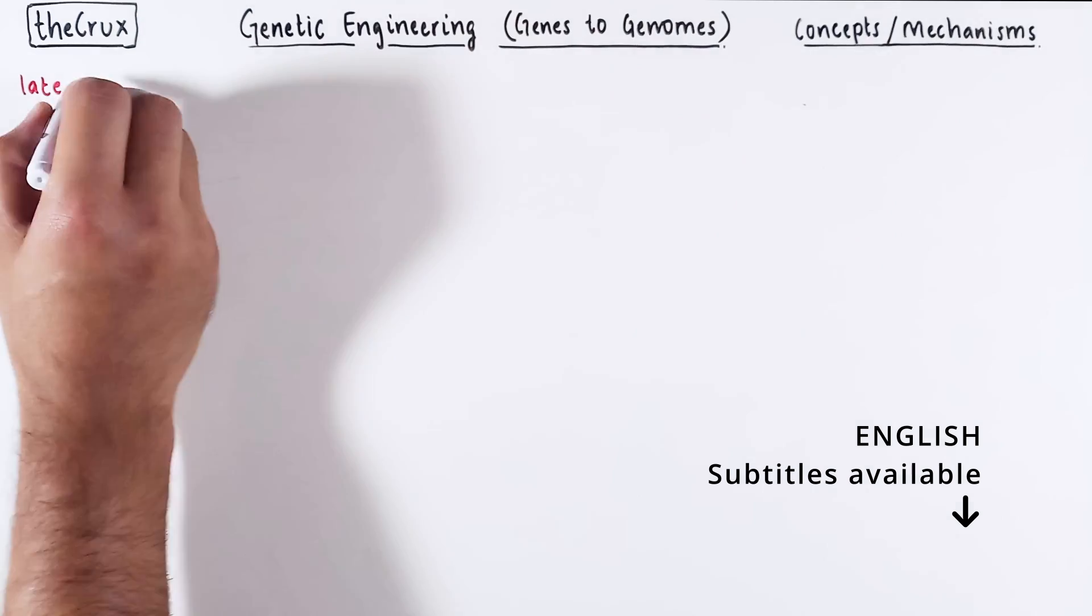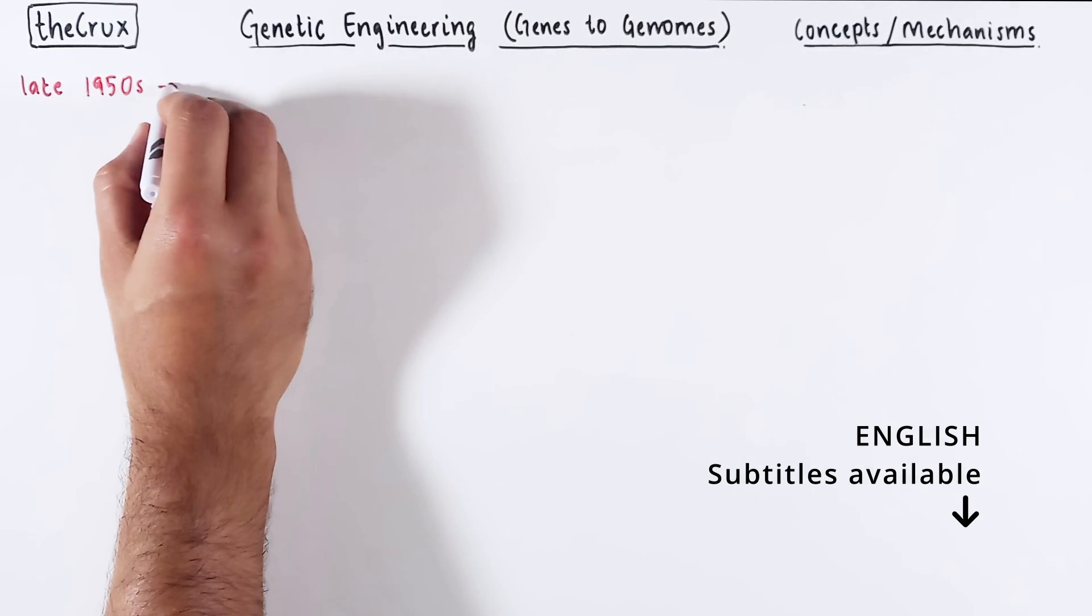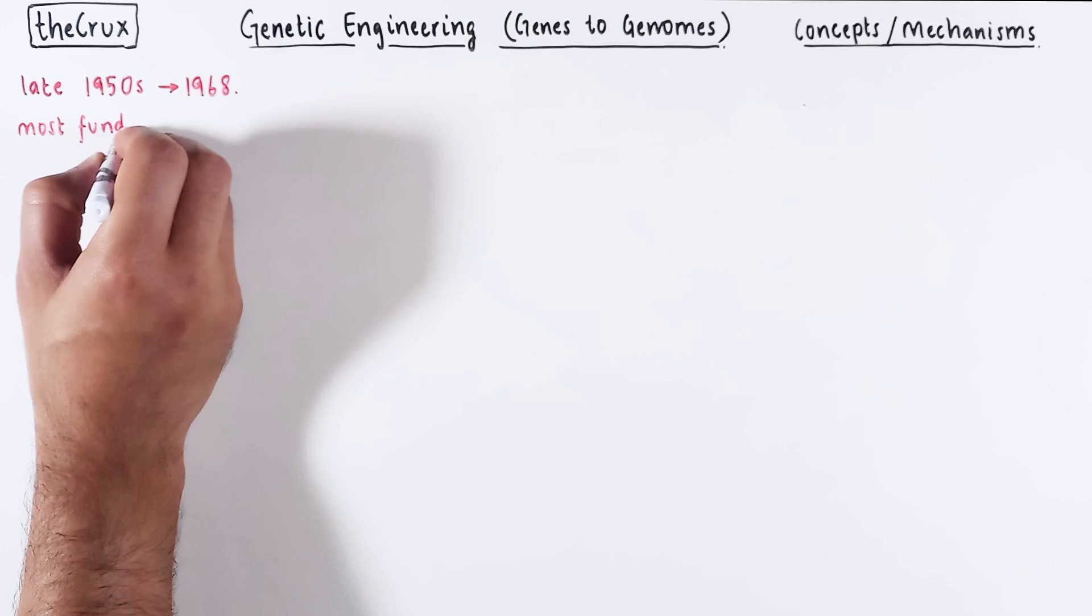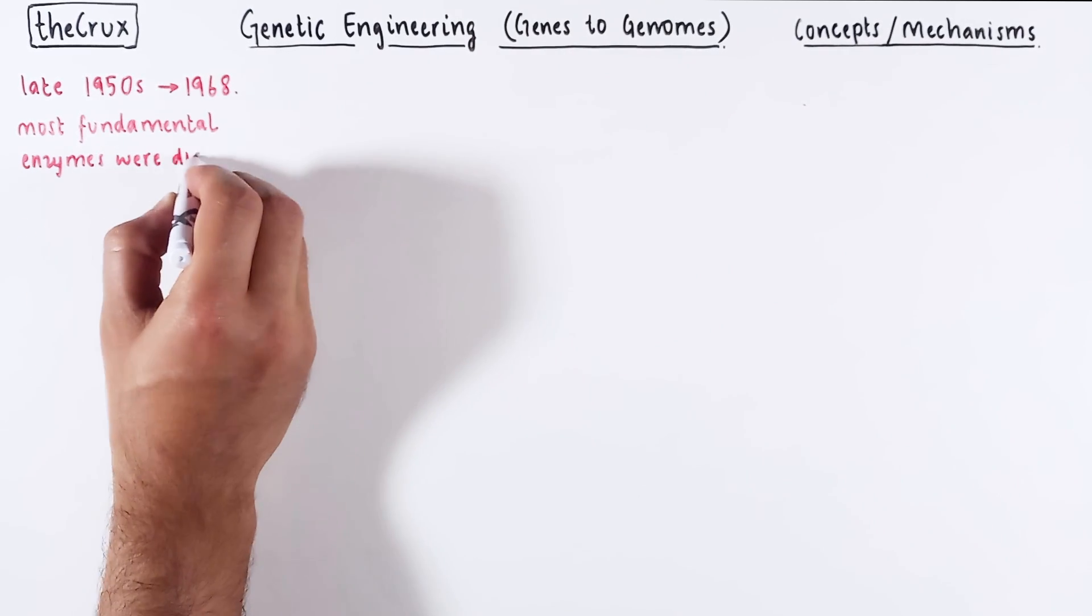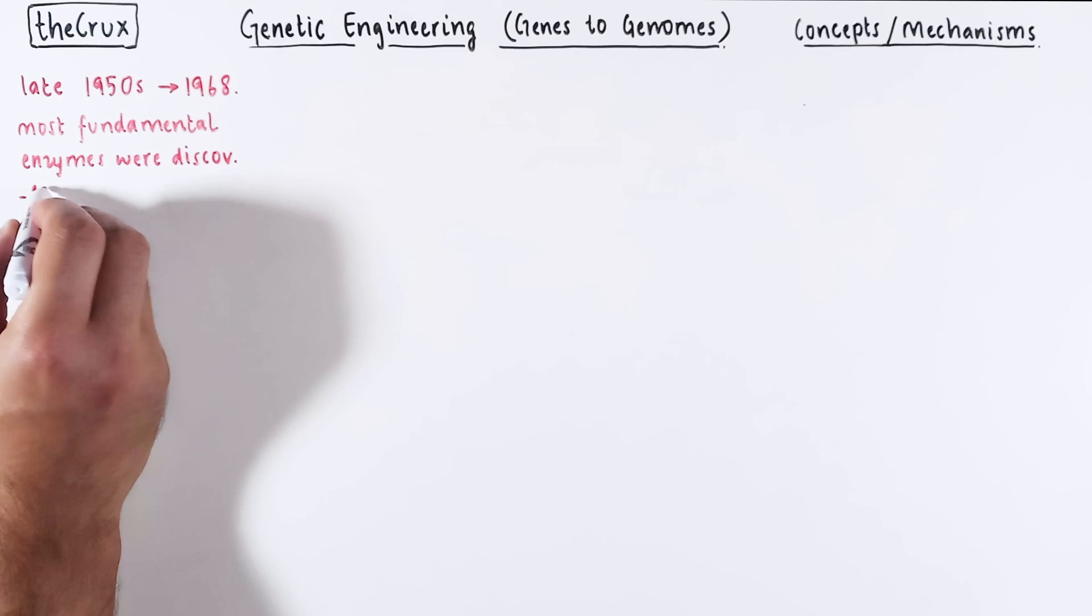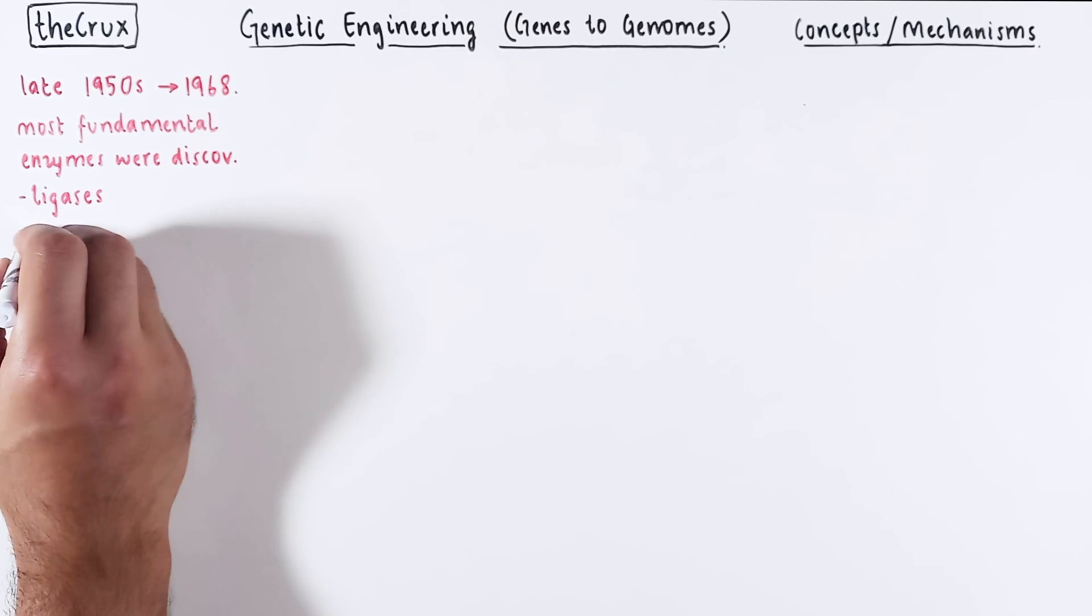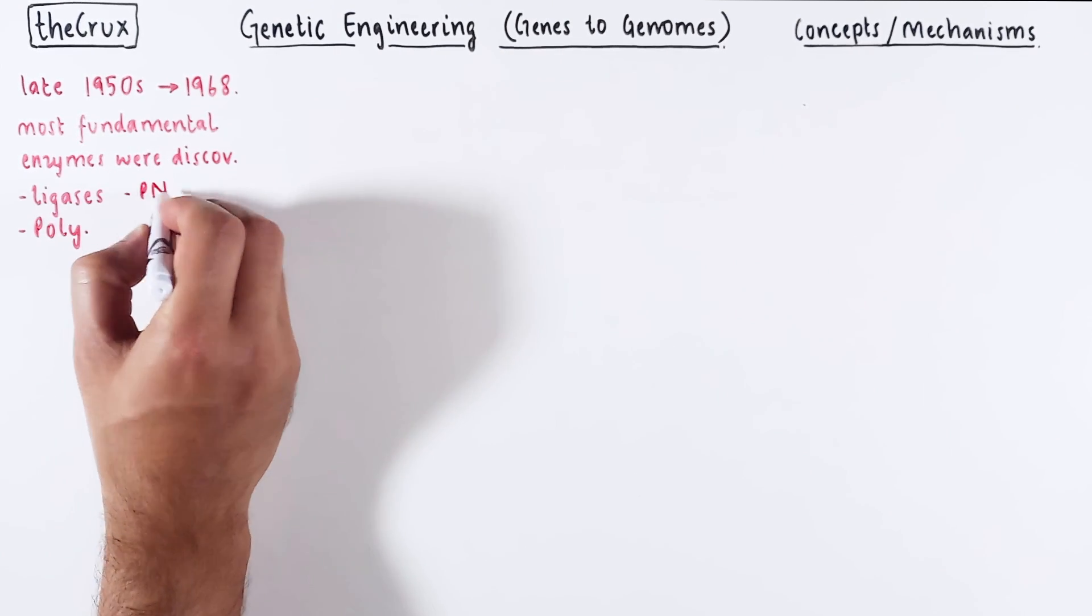During the late 1950s and up until late 1960s, after the structure of DNA had been discovered, numerous fundamental discoveries were made. We gained insights into many essential enzymes that formed the foundation of genetic engineering, such as ligases, polymerases, kinases, and more.